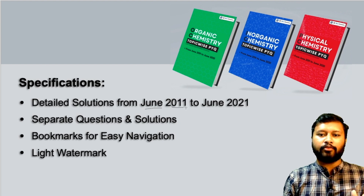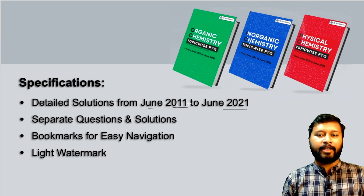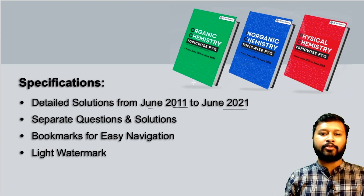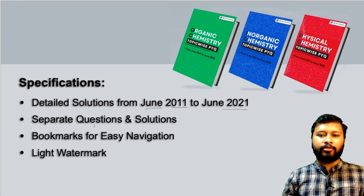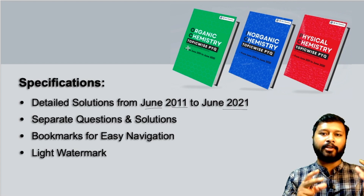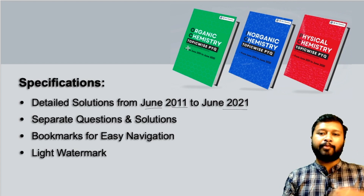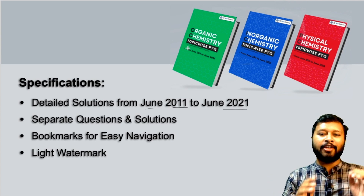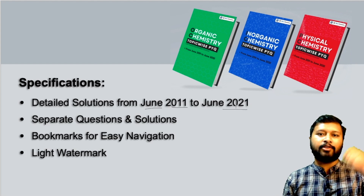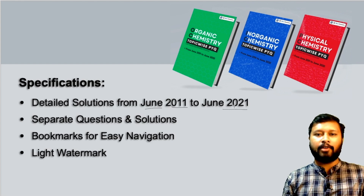You are going to get detailed solutions covering June 2011 till June 2021, including the latest exam. One key improvement is that we have separated questions and solutions — questions are separate, solutions are separate — especially for inorganic and physical chemistry. For organic chemistry, some topics like reaction mechanism are not separated; you'll get the question followed by the answer. But for other topics like pericyclic reactions and photochemistry, questions and solutions are separated out, which is especially helpful when you're practicing and don't want to see the solution right away.